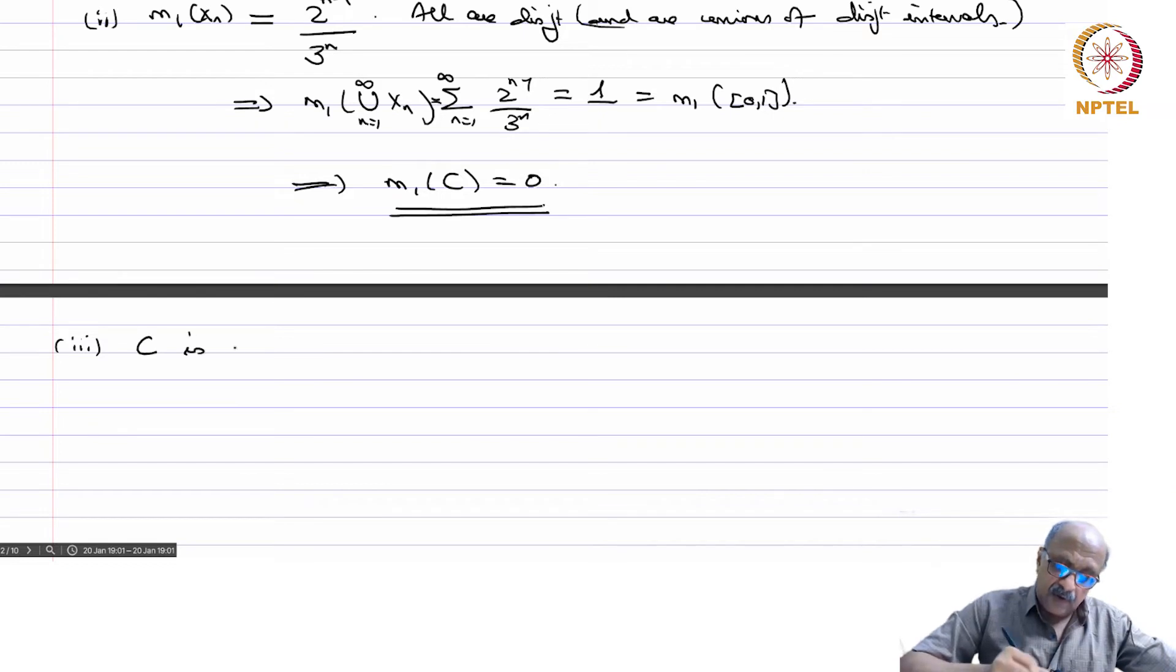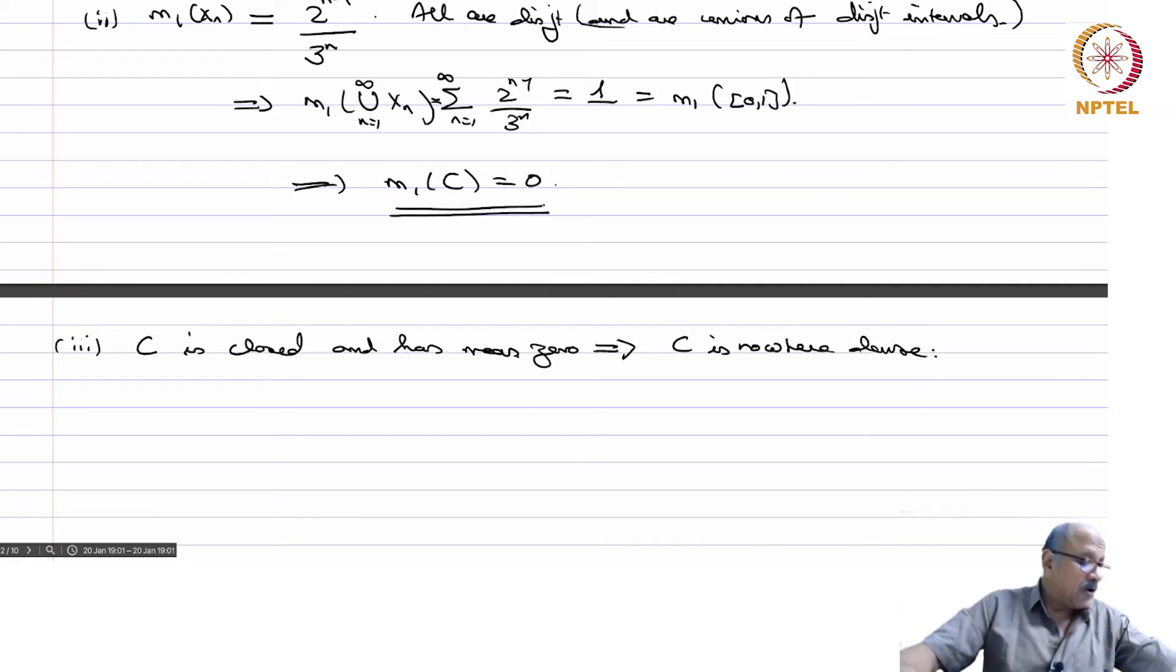So C is closed and has measure 0. C is closed and therefore this implies C is nowhere dense. We already saw that.